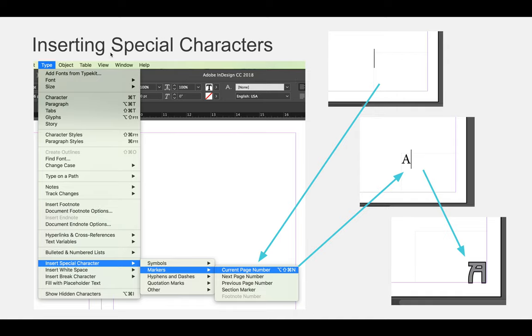You can then go to the Type menu and choose Type, Insert Special Character, Markers, and Current Page Number. It will automatically insert the automatic page number, and again, because it's on master A, it is the letter A. And then I formatted it to whatever I wanted to format it for my project.